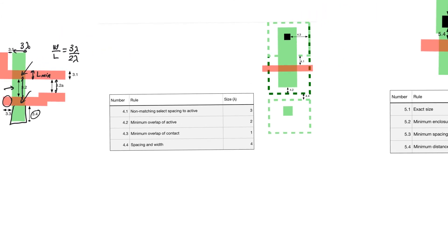Going up, we perform the ion implantation through the p-select and n-select masks, which also have a minimum dimension. They have a minimum overlap of the active they contain, and if there is a contact within the active, they also must have a minimum overlap of that active.